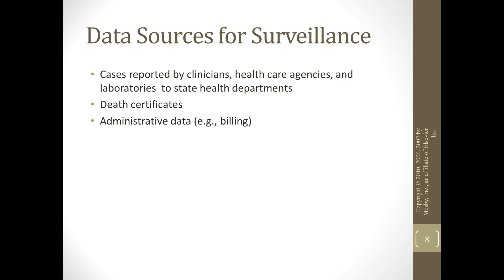Sources of data for surveillance include specific cases — for example, a doctor's office with a large number of a specific disease. Labs are also a source: what kinds of lab tests are being done, how many are positive, and is that number changing? Death certificates can help provide some information, though they can be vague — for example, 'natural causes' doesn't tell us much. Administrative data such as billing and insurance records can provide some information, but that is limited.